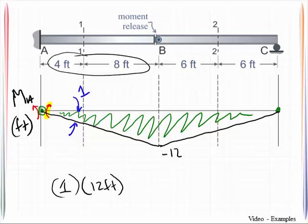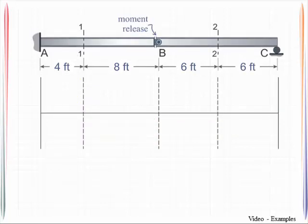That is your complete influence line for the moment at A. Let's look for the influence line for the shear at section 1-1. We will insert a release. I am just going to sketch a shear release at this location.